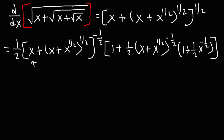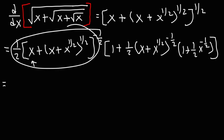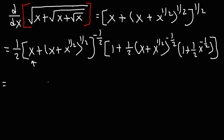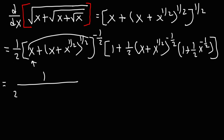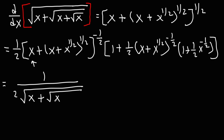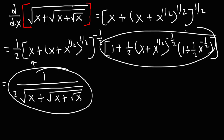This is the answer, but we need to clean it up a bit. The negative one half tells us that we have a square root function underneath the fraction. We can rewrite the whole expression like this: this one remains on top of the fraction, the two is on the bottom, and all of this will be on the bottom due to the negative exponent — so that's going to be the square root of x plus the square root of x plus the square root of x.